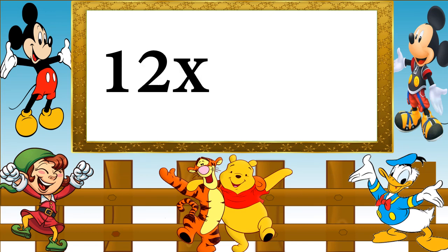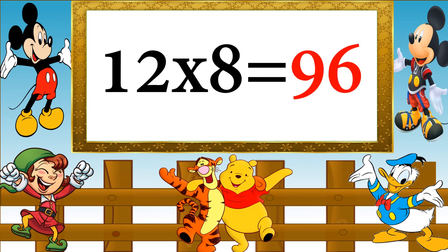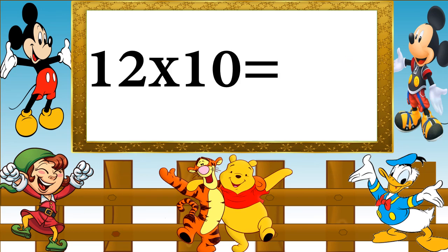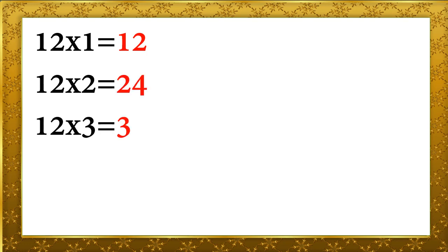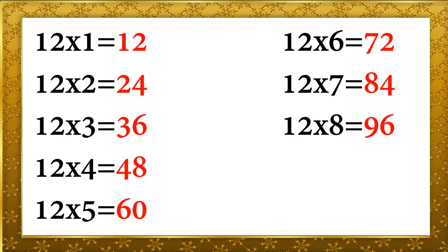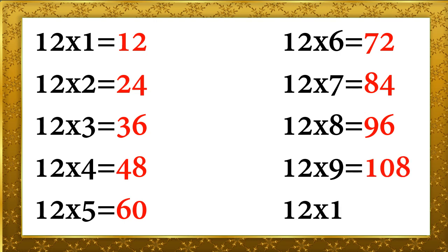Table of 12. 12 sevens are 84, 12 eights are 96, 12 nines are 108, 12 tens are 120. 12 ones are 12, 12 twos are 24, 12 threes are 36, 12 fours are 48, 12 fives are 60, 12 sixes are 72, 12 sevens are 84, 12 eights are 96, 12 nines are 108, 12 tens are 120.